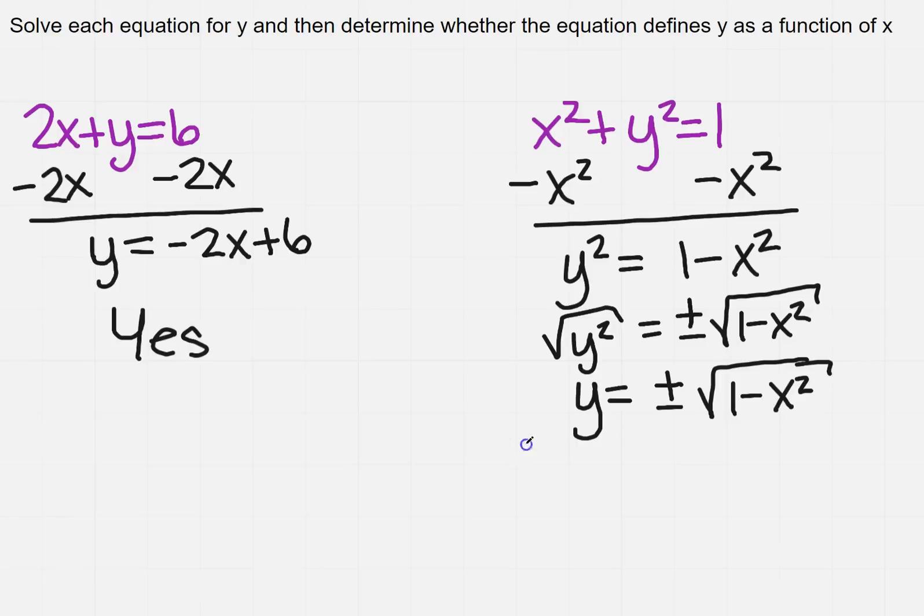So let's say if I did x and y, and let's just pick 0, because it's usually easy. If I pick 0 here, I'm going to get plus or minus 1. Right there, it tells you that 0 goes to plus 1 and 0 goes to minus 1. So then this is not a function.